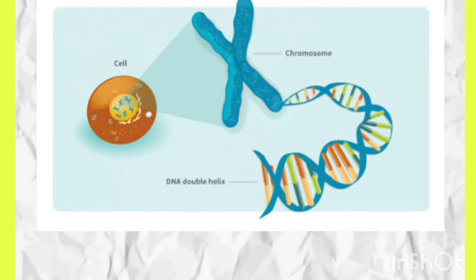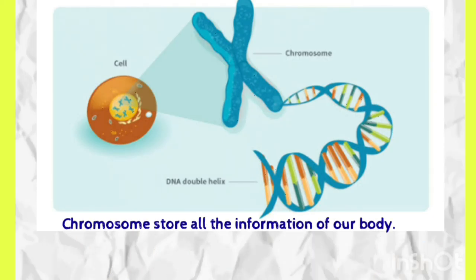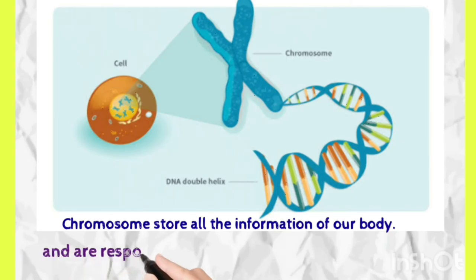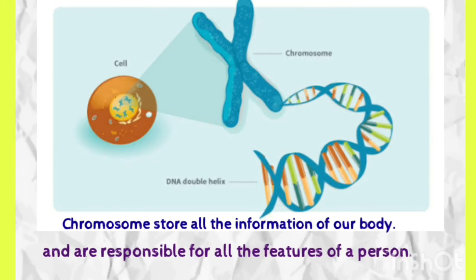In cells, there is a part called the nucleus, and in that nucleus there are chromosomes. Always remember, chromosomes are a very important part, because all of our body's nature — our body's characteristics, how we see, how we speak, how we eat — all this information is pre-stored in the chromosome. The chromosome is actually a programming device, and chromosomes are responsible for all the features of our body.